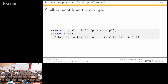Applying this to our example gives a proof of P→(P∧P) completely at the Dedukti level, using only lambda abstractions and applications. This approach is more convenient than the iProver Modulo approach: you first get a deep embedding easily from the prover, then use Dedukti rewriting to obtain a shallow embedding.